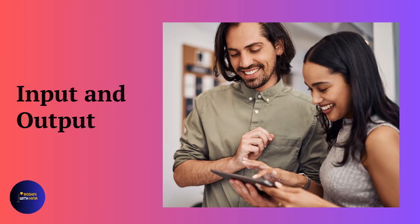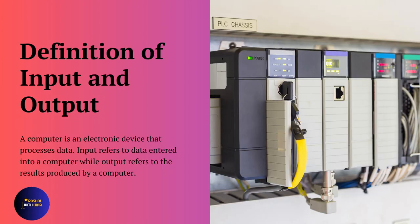Input and output. Definition of input and output. A computer is an electronic device that processes data. Input refers to data entered into a computer, while output refers to the results produced by a computer.